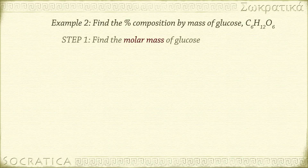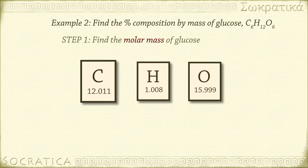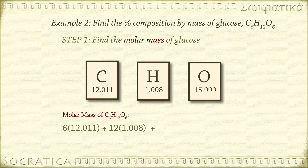Step 1: to find the molar mass of glucose, C6H12O6, sum up the gram-atomic masses of the individual atoms from the periodic table. There are 6 atoms of carbon, 12 atoms of hydrogen, and 6 atoms of oxygen. So the molar mass of glucose equals 6 times 12.011 grams per mole, plus 12 times 1.008 grams per mole, plus 6 times 15.999 grams per mole, equals 180.156 grams per mole.